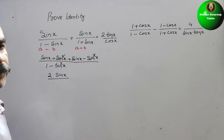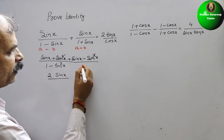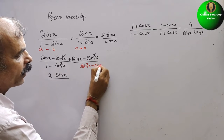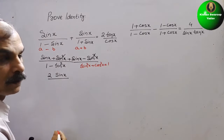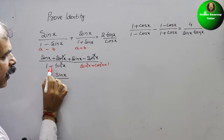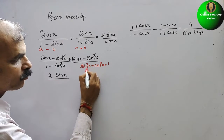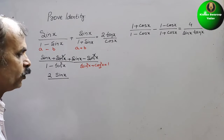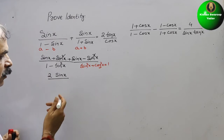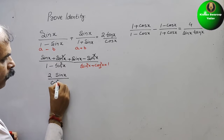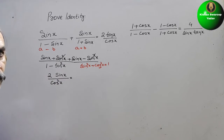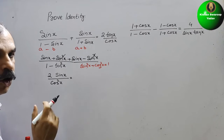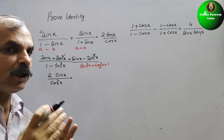Now one identity comes in. We have the identity sin²x + cos²x = 1. They have given 1 - sin²x in the denominator, so 1 - sin²x = cos²x. So here we will write cos²x.